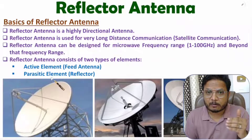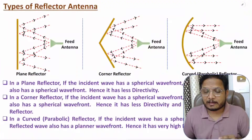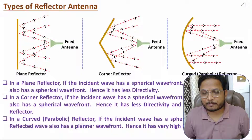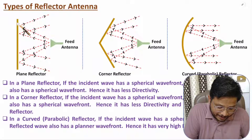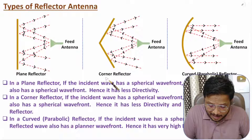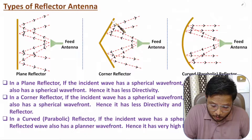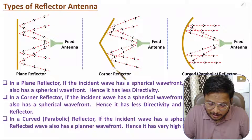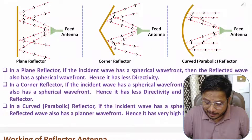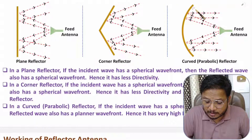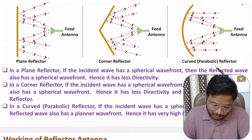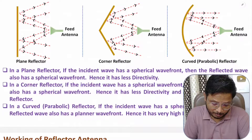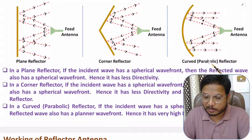Now I'll explain the different types of reflector antennas. In general there are three types: the first is the plane reflector, which has a flat plate; the second is the corner reflector, with two plates placed at an angle — typically 90 degrees; and the third is the curved reflector, usually with a parabolic curve, called the parabolic reflector.